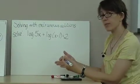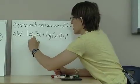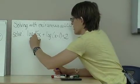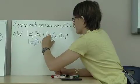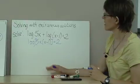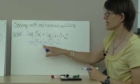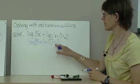So I have log 5x plus log of the quantity x minus 1 equals 2. So I'm going to simplify this using the product property. Okay, so 5x times the quantity x minus 1. Take the log of that and you get 2.